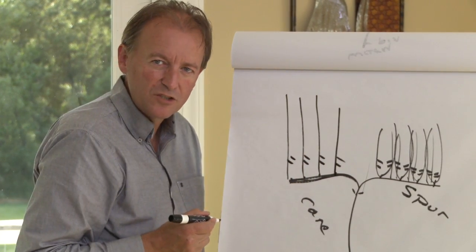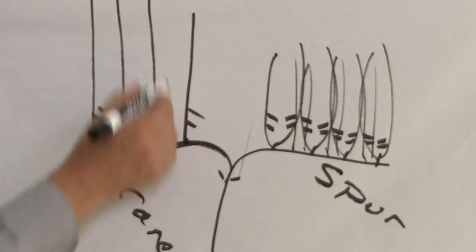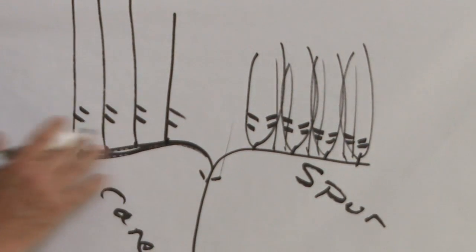Much more air flow, much more light penetration, and there is no water shoots that will grow up because there's nothing for that shoot to grow on, unlike a spur prune vineyard.